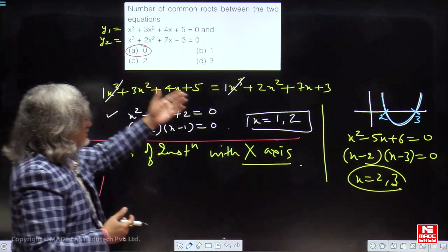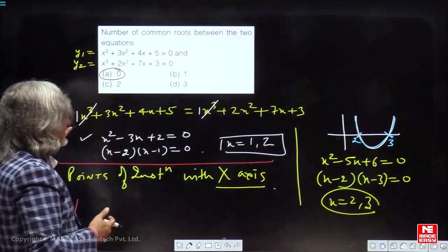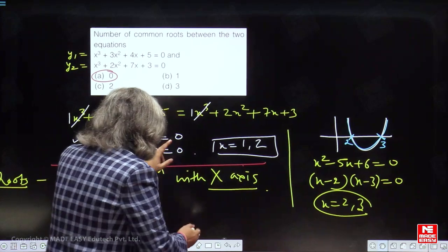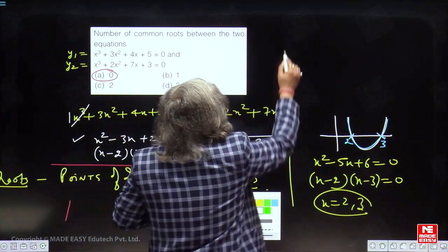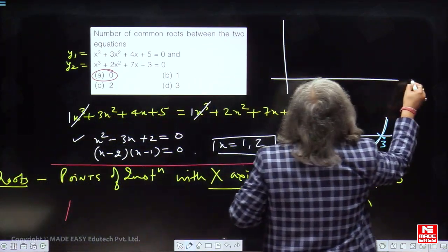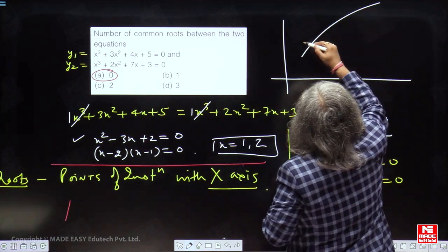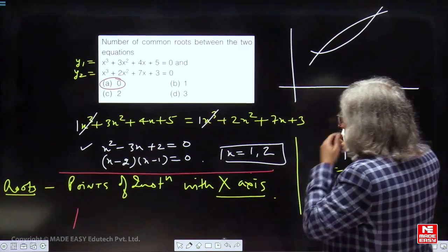You will ask, sir, then what are these points? These points are merely point of intersection. How I can prove that? Very simple. My dear student, we will see this thing once again and we will crystal clear this concept.